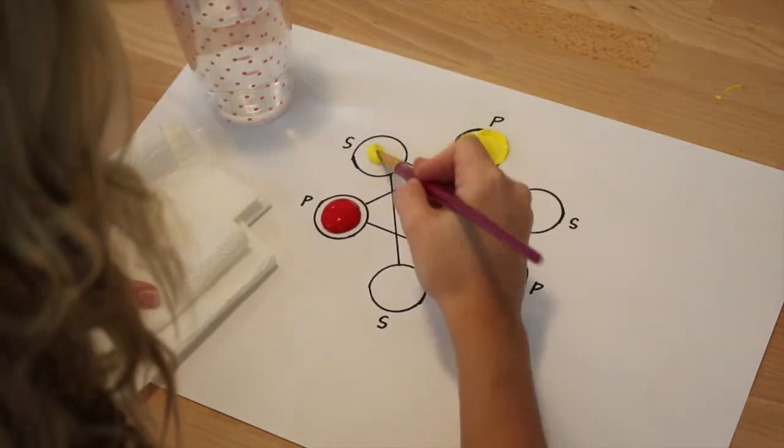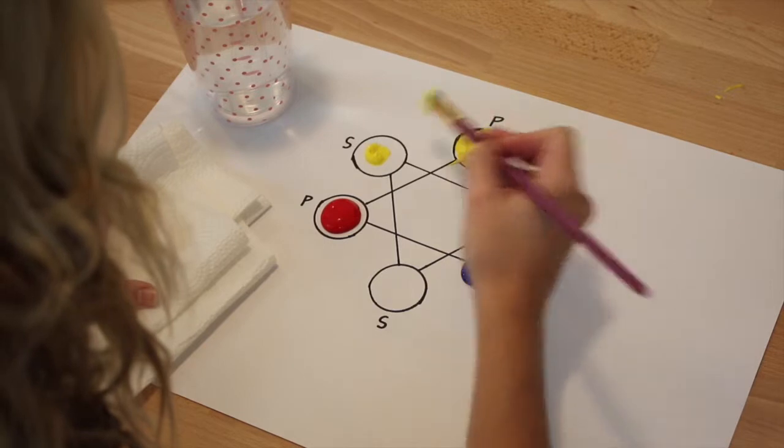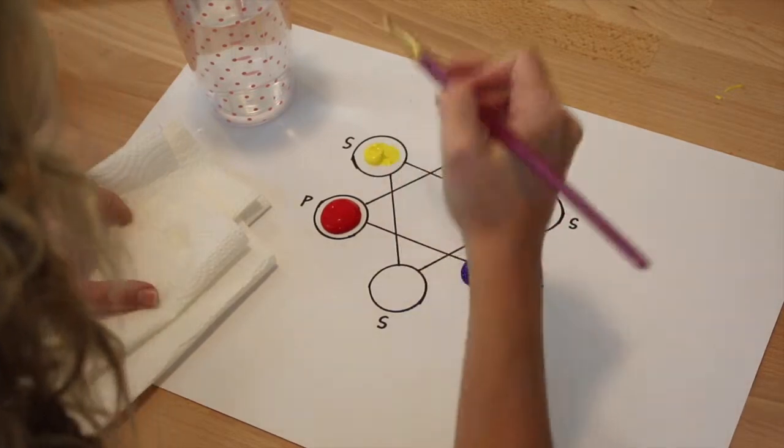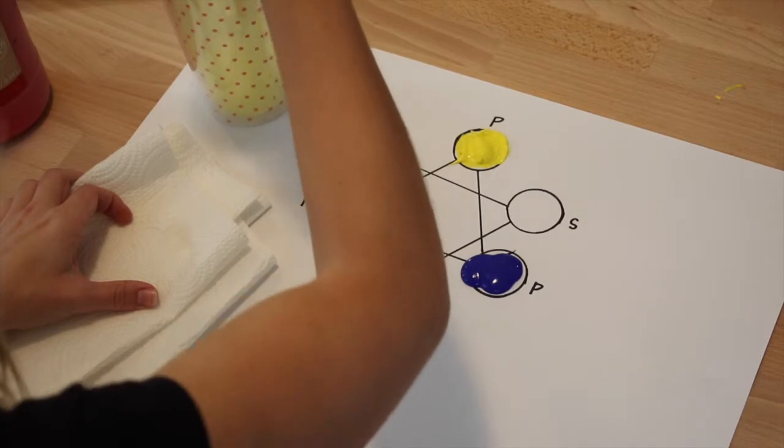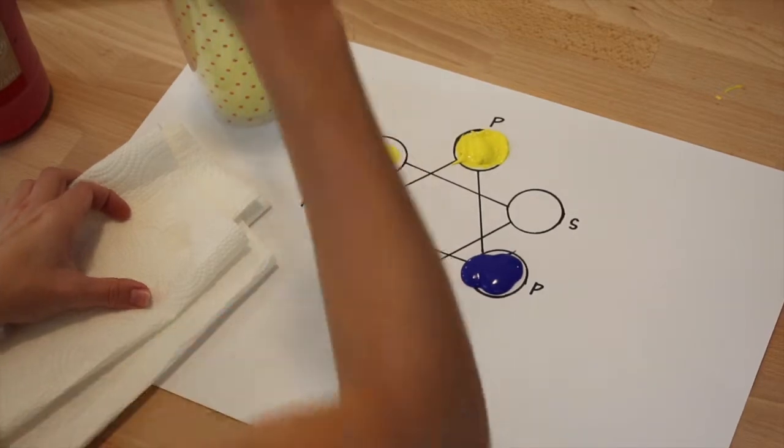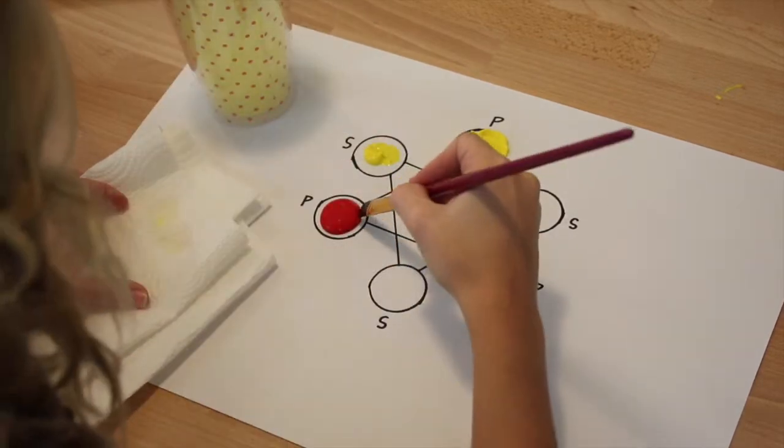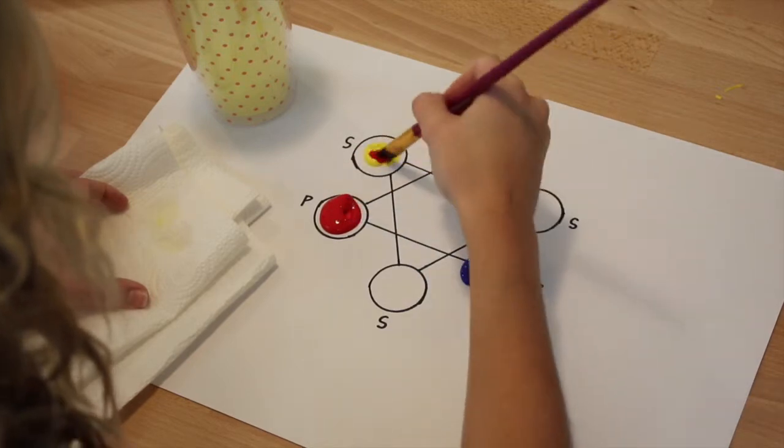Then we will take our brush and dip it into the yellow and place it in the secondary slot. We'll clean our brush and make sure that you get all the paint off, wipe it on the paper towel, and then dip it into red.